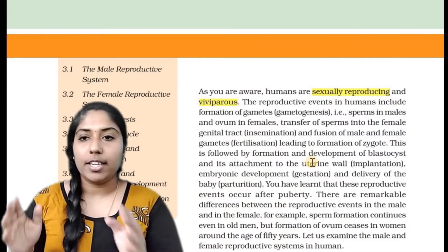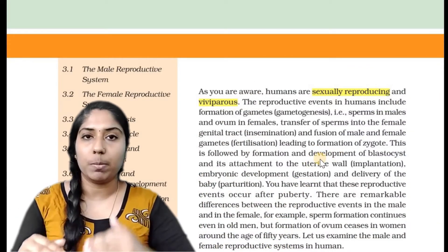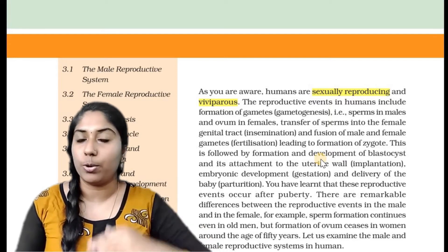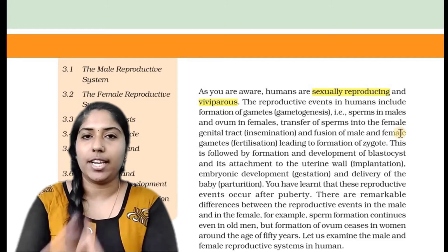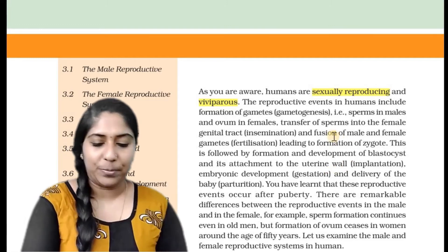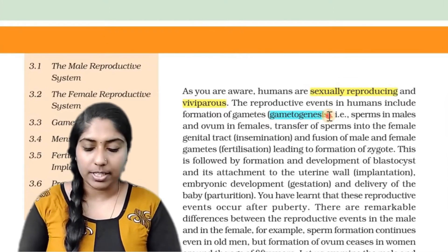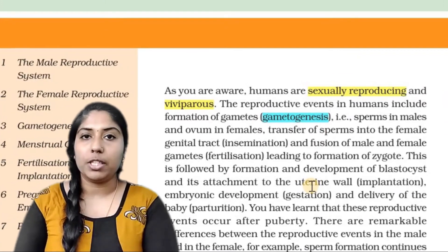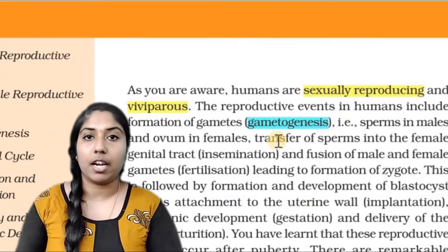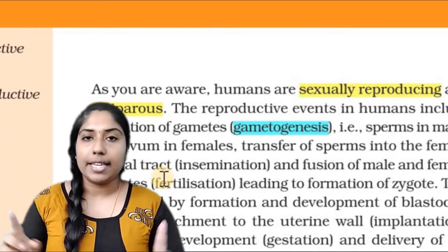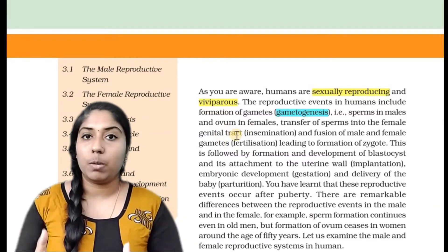What are the events in human reproduction? The first event is Gametogenesis, which is the production of gametes. In males it is sperm formation, and in females it is ovum formation. Gametes form the sperm and ovum.